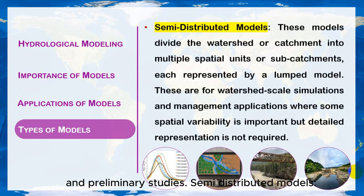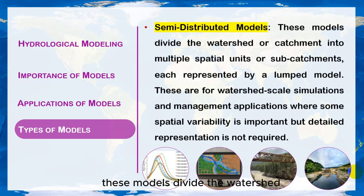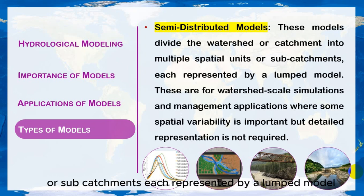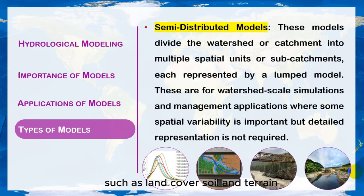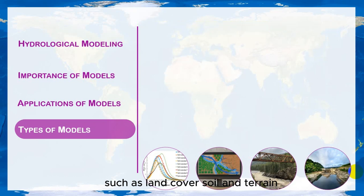Semi-distributed models divide the watershed or catchment into multiple spatial units or sub-catchments, each represented by a lumped model. These models retain some level of spatial variability by considering different characteristics such as land cover, soil, and terrain.